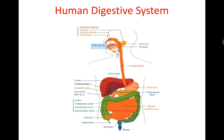The small intestine is a 6-meter long and 2.5-centimeter broad tube coiled within the abdominal cavity. The coils are held together by mesenteries supporting blood vessels, lymph vessels and nerves. The small intestine is divided into three parts: duodenum, jejunum, and ileum.